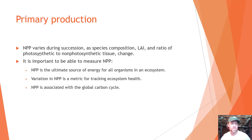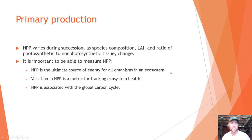NPP also varies during succession, as species composition, leaf area index, and the ratio of photosynthetic to non-photosynthetic tissues all change. It's important to be able to measure net primary production, as it is the ultimate source of energy for all organisms in the ecosystem, and across the earth the variation in NPP is a metric for tracking ecosystem health and is associated with the global carbon cycle.